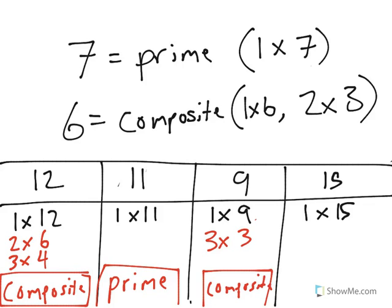And last is 15. I could do 1 times 15, or 3 times 5, which means that 15 is also composite.